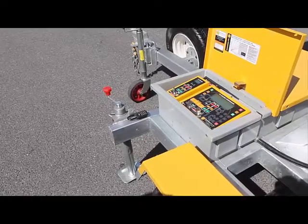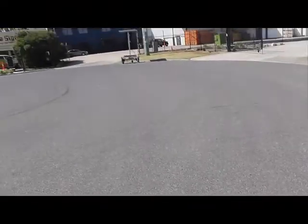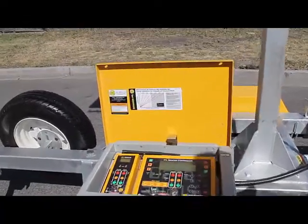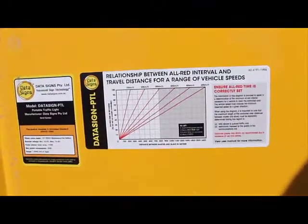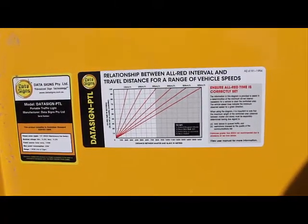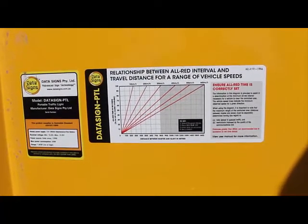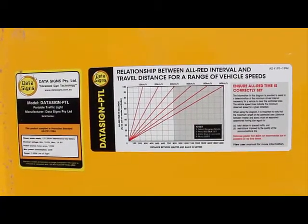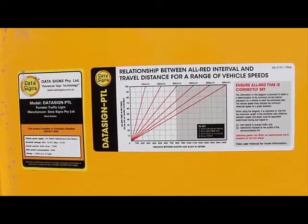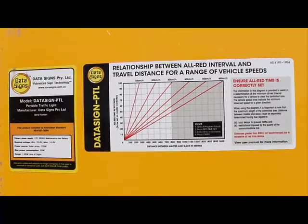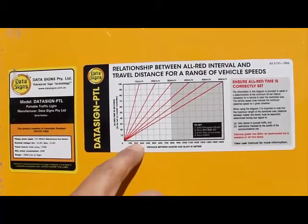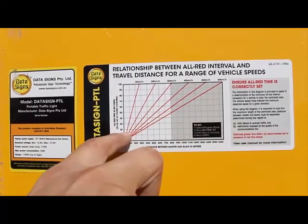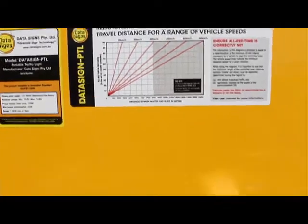To set the all red time, start by determining the distance between the master and slave. Refer to the chart inside the control box lid, taken from Australian standard AS4191, which uses metres as the unit of measurement. Based on the current speed limit set on the roadway, find the recommended all red time to set. For example, at 200 metres apart with a 40km/h speed limit, set the all red time to about 15 seconds. Press the all red button to set this.